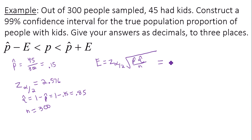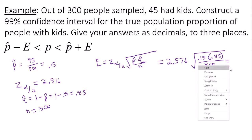In the error bound formula, plug in all of these known values. We have 2.576 times the square root of 0.15 times 0.85 divided by 300. And at the end of the day here, your error bound or margin of error is going to be to three decimal places, 0.0531.